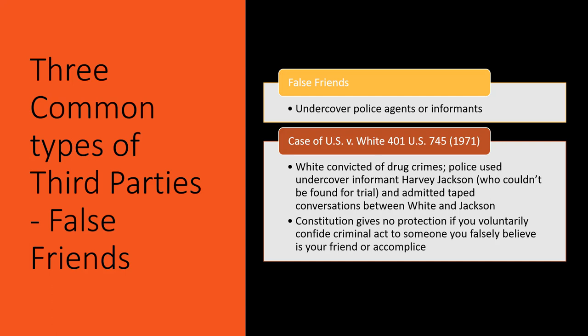Common types of third parties include undercover police agents or informants. In U.S. v. White, decided in 1971, White was convicted of narcotics violations. They used an undercover informant, Harvey Jackson, and though they couldn't find Jackson at trial, they did admit the tape-recorded conversations between the two. The Supreme Court said the Constitution does not give you protection if you voluntarily cooperate with and talk to someone you believe is your friend or accomplice, but isn't. You've just got no protection there.